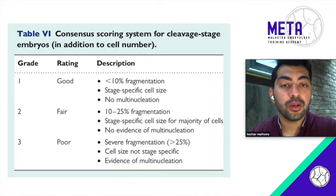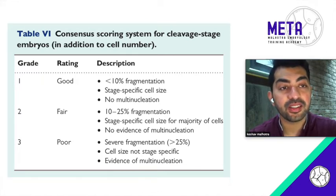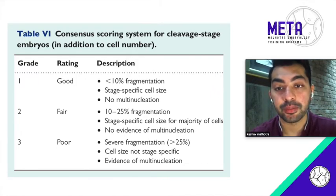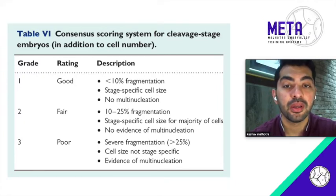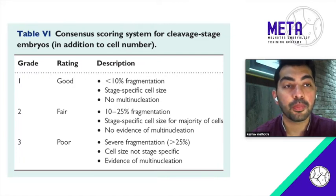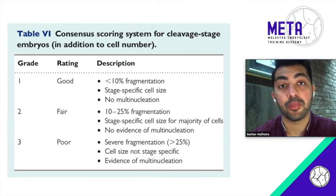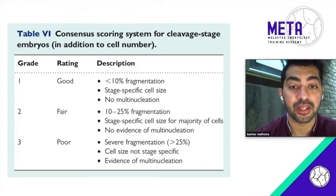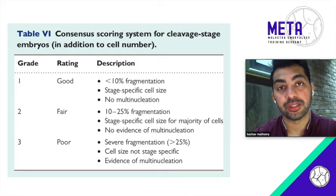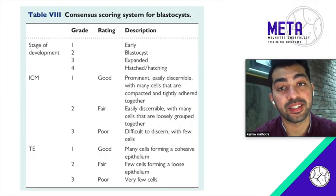A Grade 1 embryo has stage-specific cell size, no multi-nucleation, and less than 10% fragmentation. A Grade 2 embryo has 10 to 25% fragmentation, stage-specific cell size for the majority of cells, and no evidence of multi-nucleation. A Grade 3, or poor quality, embryo has more than 25% fragmentation, cell size is not stage-specific, and there is evidence of multi-nucleation. This is how you grade a cleavage stage embryo.